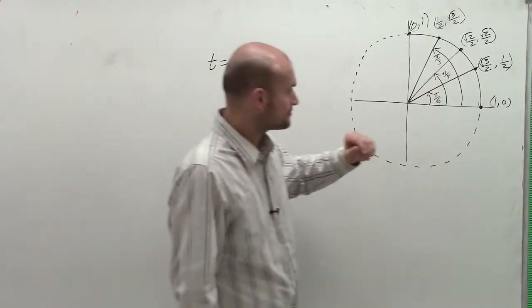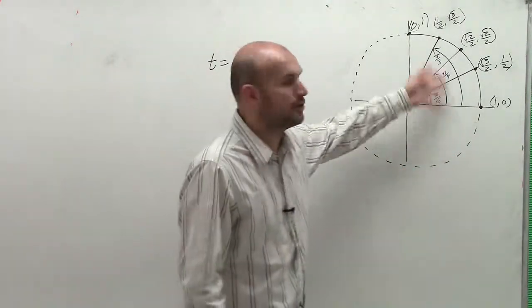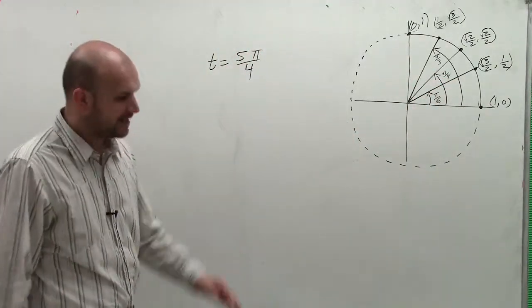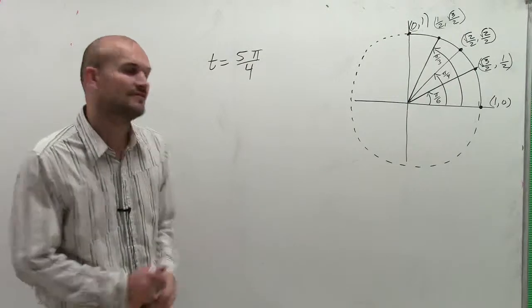Once you know that, finding the coordinate point is very important. I go through a whole video on how we get these coordinate points. But now what I'm concerned about is just where's the coordinate point at the given angle?